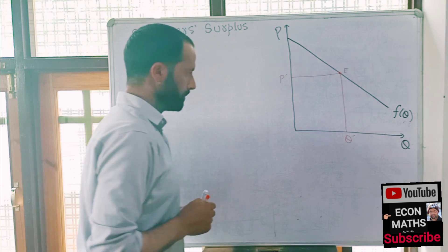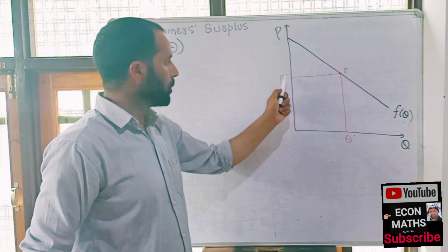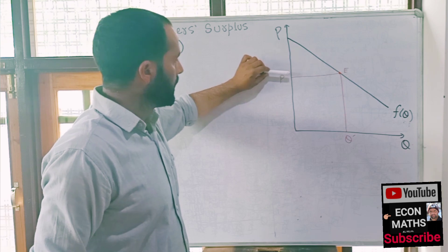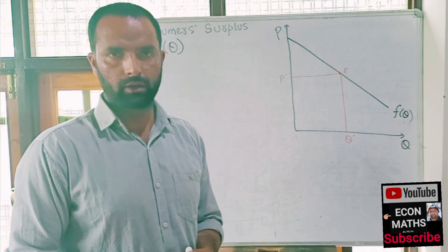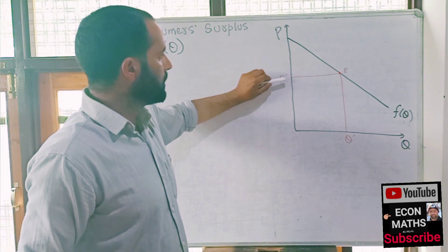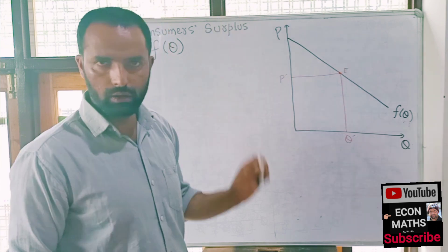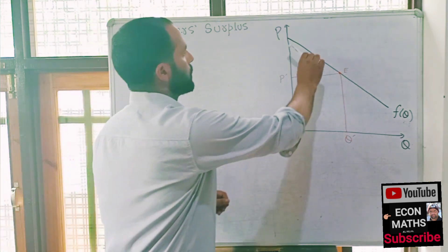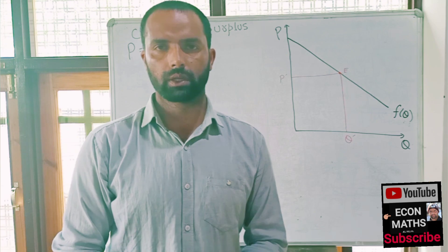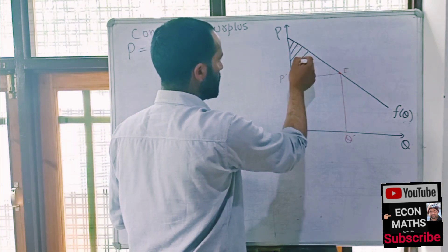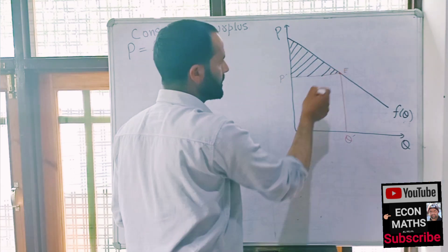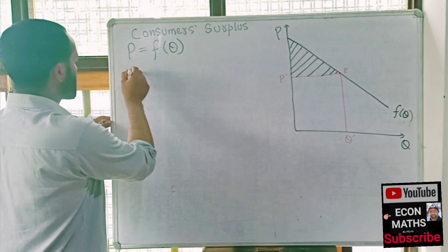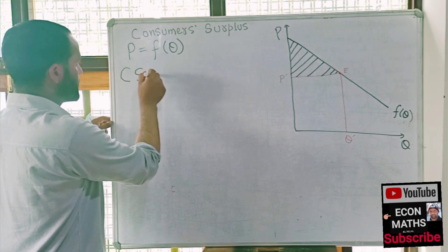If equilibrium occurs at P' and Q' — where P' is the equilibrium price and Q' is the equilibrium quantity — then the consumers who are willing to pay more than the equilibrium price will benefit. They will pay only the equilibrium price, but they were willing to pay more. This region, which is above the equilibrium price and below this demand curve, represents the consumer surplus.